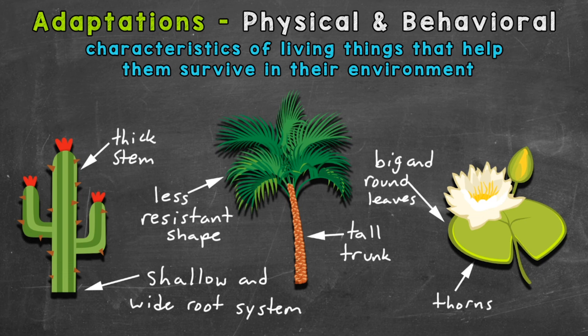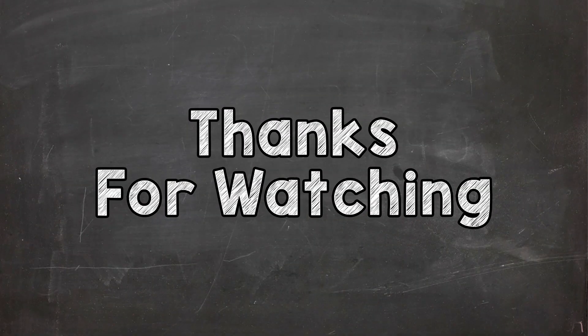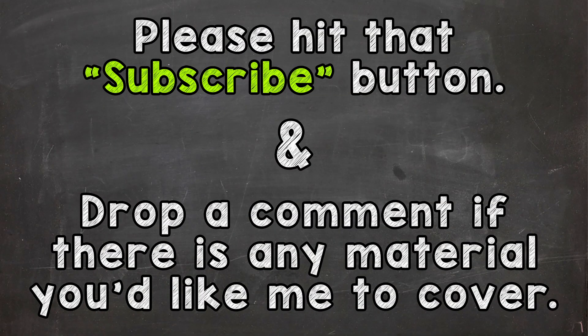I wanted to give a couple more behavioral examples before we end. Sunflowers have the ability to face and follow the sun throughout the day. Other behavioral adaptations include vines climbing up trees to collect sunlight, and plants' instincts to grow towards the sun. So there you have it — some examples of plant adaptations. I hope that helped. Thanks so much for watching. Until next time, peace.